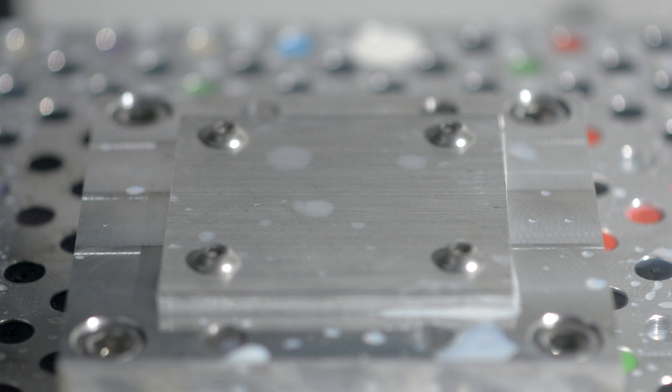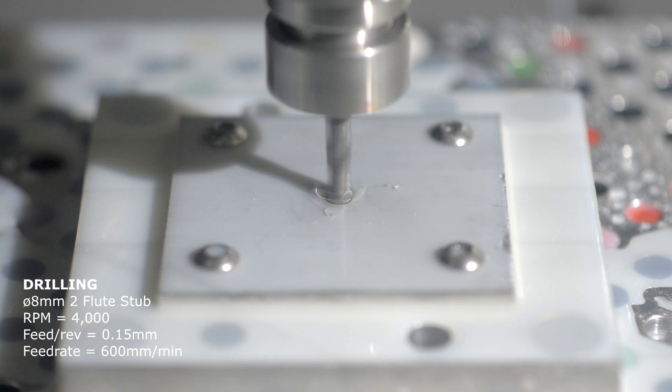Now I've bolted the prepared stock onto the fixture, the first thing I'm going to do is drill the eight holes along with a pre-drill for the main bore.